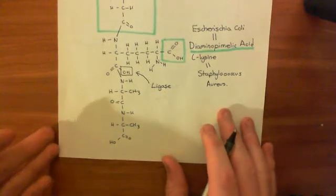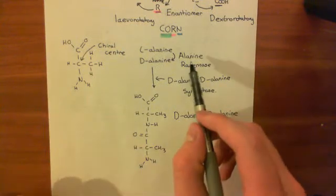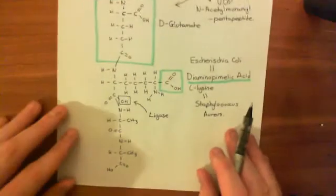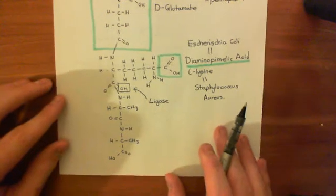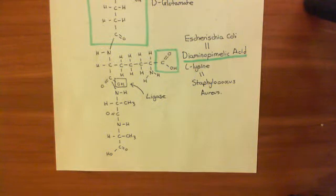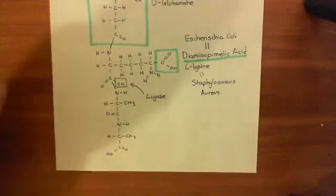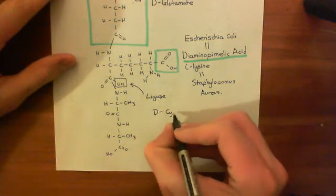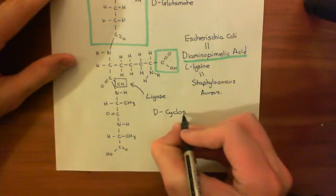Why was it important to painstakingly name all of these enzymes — alanine racemase, D-alanine-D-alanine synthetase, and the ligase which binds D-alanine onto the UDP N-acetyl muramyl tripeptide? Well, there is a drug which blocks them all — or is believed to block them all — and this drug is known as cycloserine, specifically D-cycloserine.